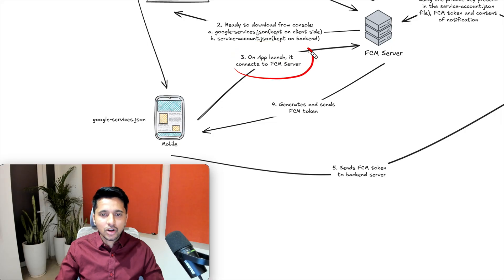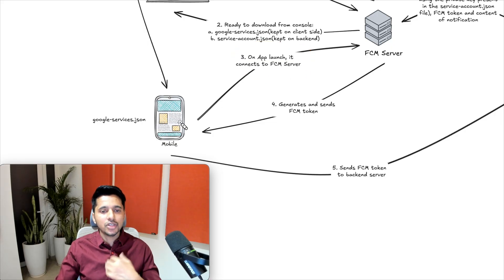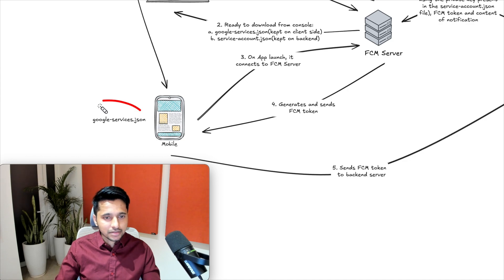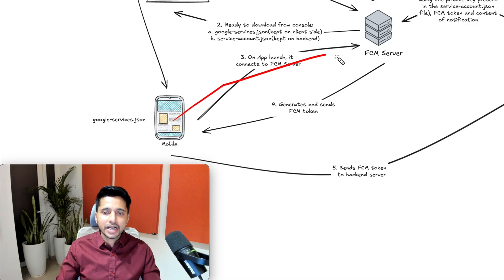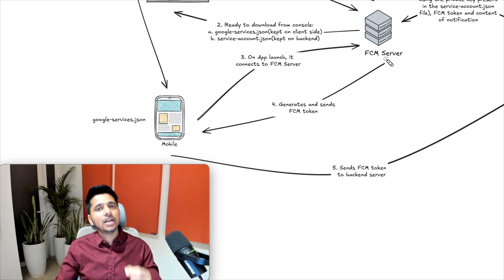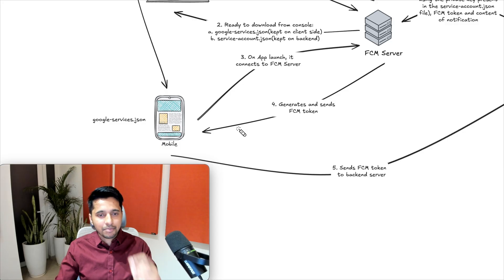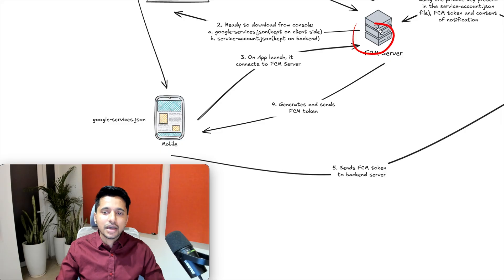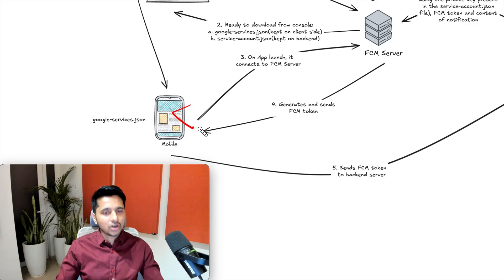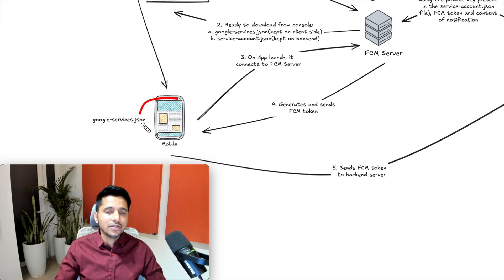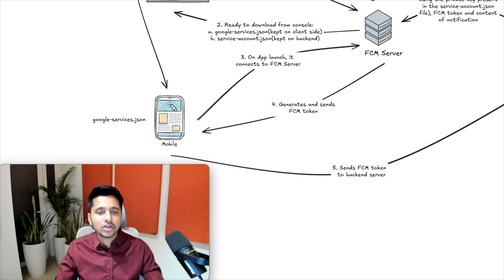The third step is launching the application — either we launch it or our user does. Because we have google-services.json in our project, our app will be able to connect with the FCM server. The FCM server will then generate an FCM token specific to this app and this particular user, and send that token back to the client.